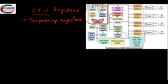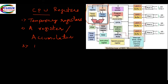We have the A register, also known as the accumulator. This is an important register because for most operations, one of the operands will be in the accumulator. We also have the B register, which is normally used for multiplication and division — whenever the CPU does multiplication or division, it makes use of the B register.